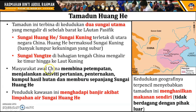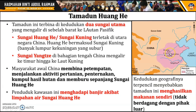Masyarakat awal China membina pertempatan, menjalankan aktiviti pertanian dan penternakan. Selain itu, mereka juga mengumpul hasil hutan dan memburu di sepanjang Sungai Huanghe. Muncullah bandar-bandar dalam Tamadun Huanghe seperti bandar Anyang dan bandar Loyang. Penduduk di kawasan ini menghadapi banjir akibat limpahan air Sungai Huanghe. Kedudukan geografi yang terpencil pula menyebabkan tamadun ini menghasilkan makanannya sendiri dan tidak banyak berdagang dengan pihak luar.